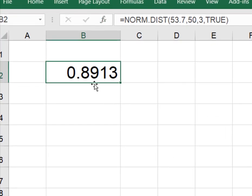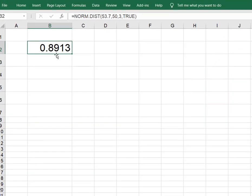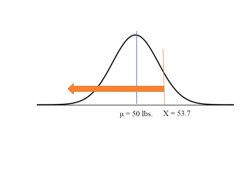And so that tells us that the probability of finding a value less than our X was 0.8913. So what Excel told us was that the probability of finding a value less than our value of X, which is this area indicated by the arrow, this whole area under the curve was 0.8913.